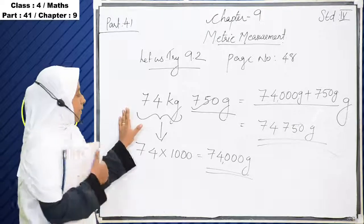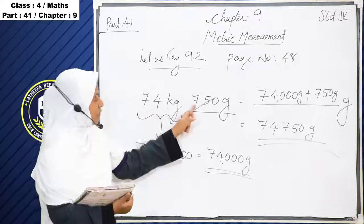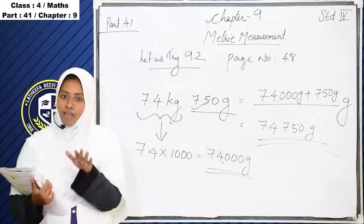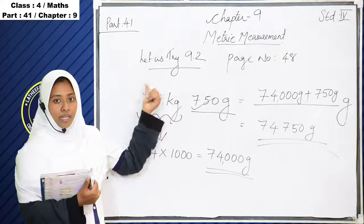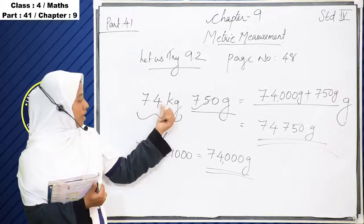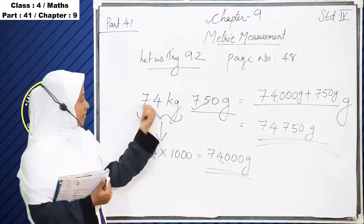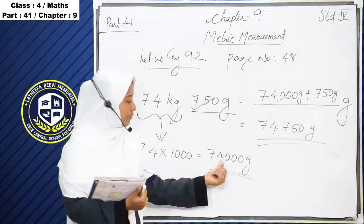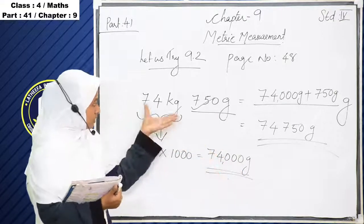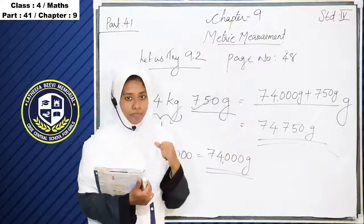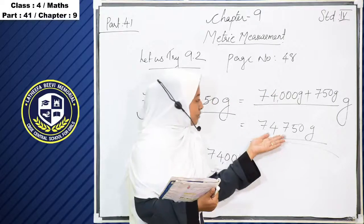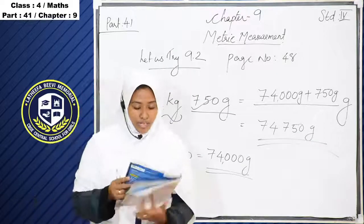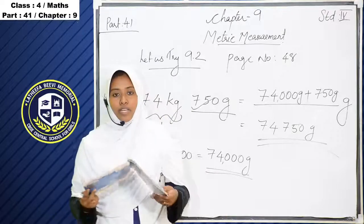So our question was 74 kilogram 750 gram, and we converted it into gram. 74 into 1000 gives 74,000, and we add 750 gram to get 74,750 gram. In this class we discussed gram and kilogram. To convert kilogram into gram, multiply by 1000; to convert gram into kilogram, divide by 1000.